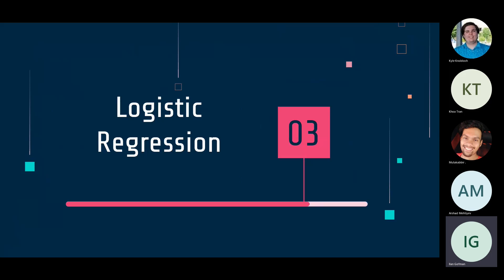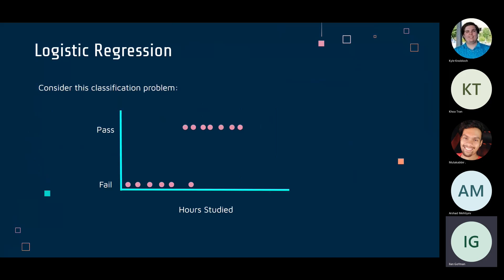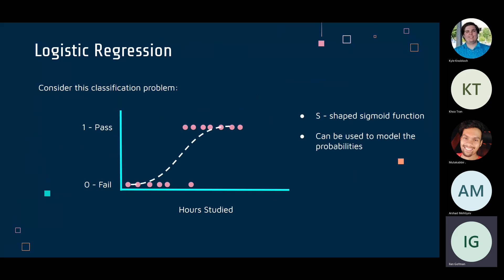We'll walk through logistic regression, a discriminative algorithm. Consider a problem where we use hours studied to classify pass or fail. Rather than drawing a single line, which could be skewed by outliers, we use a sigmoid (logistic) function — an S-shaped curve that asymptotes at the bottom-left and top-right — which nicely models probabilities.